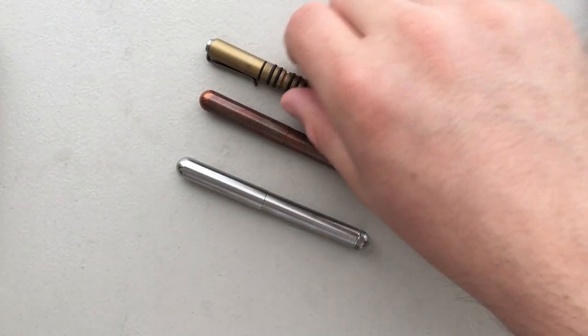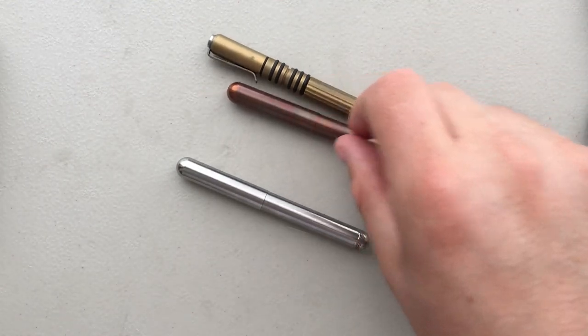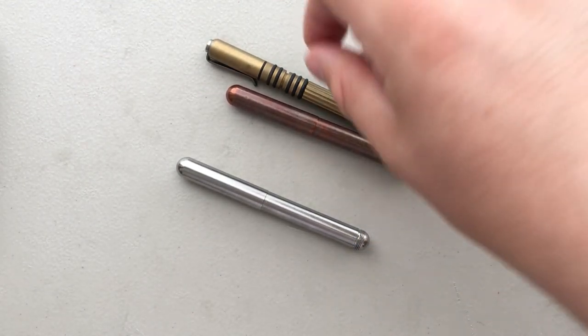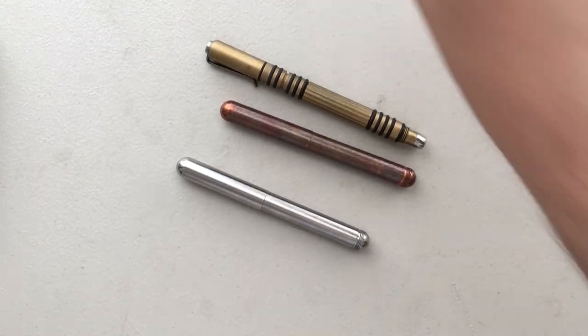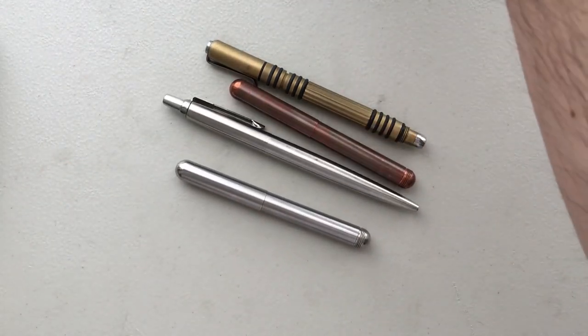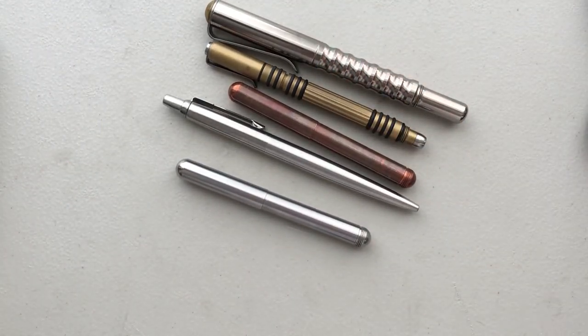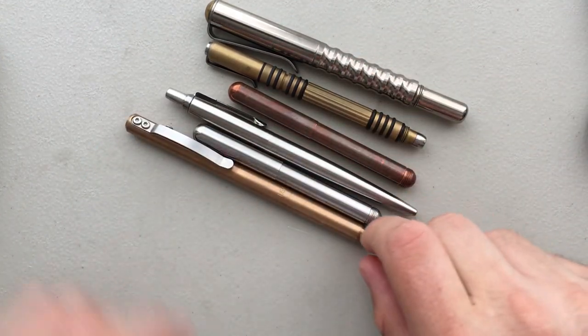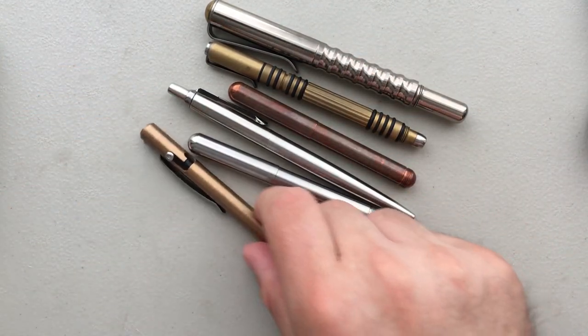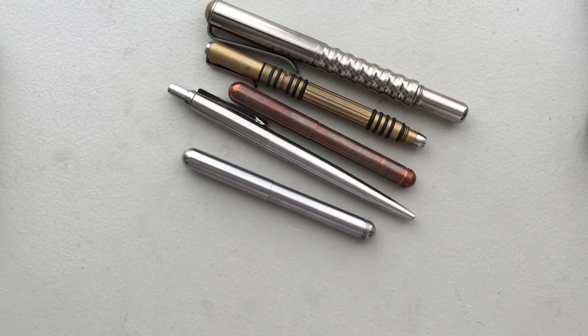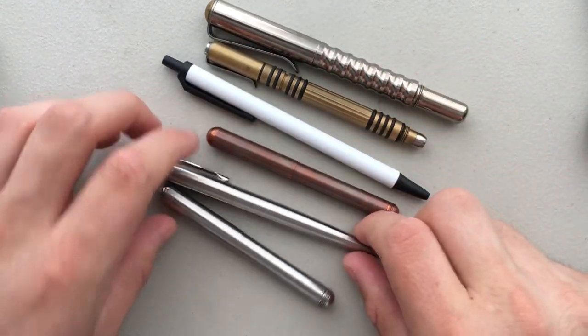In terms of the size, let's do a comparison here. Here it is next to your Hinderer Investigator pen, which is not a fountain pen obviously. Here it is next to your Parker Jotter, your Prometheus Alpha pen. This is a Max Madco bolt-action pen, got a review of that guy coming up here soon. And here's your just generic boring Bic pen.